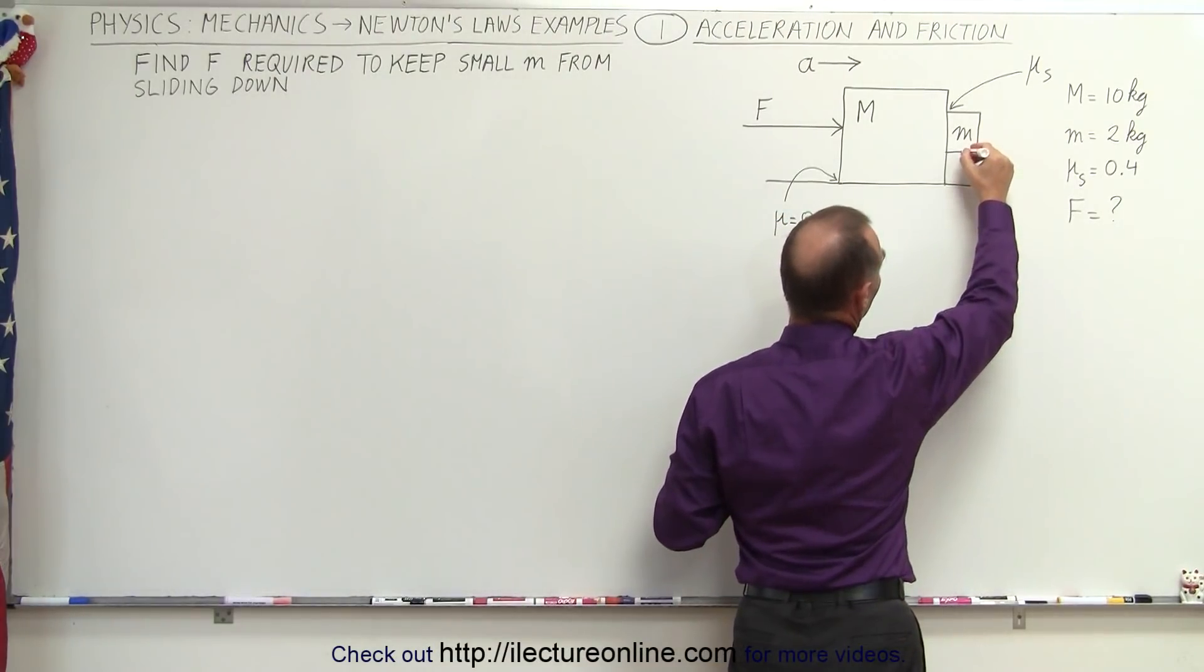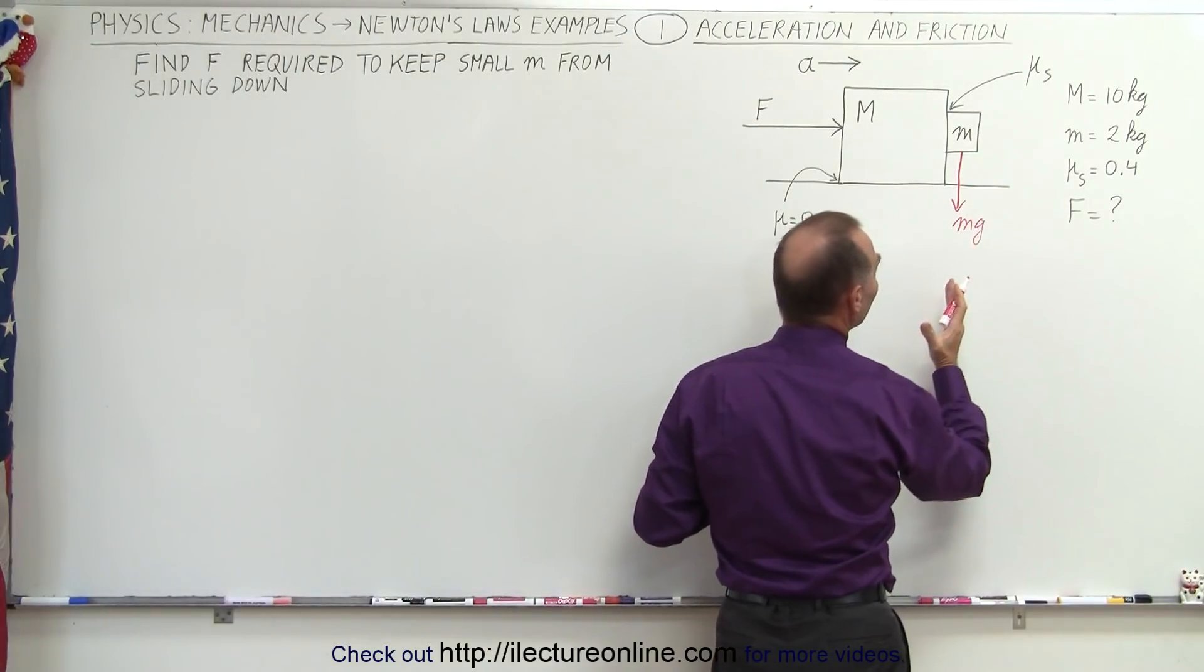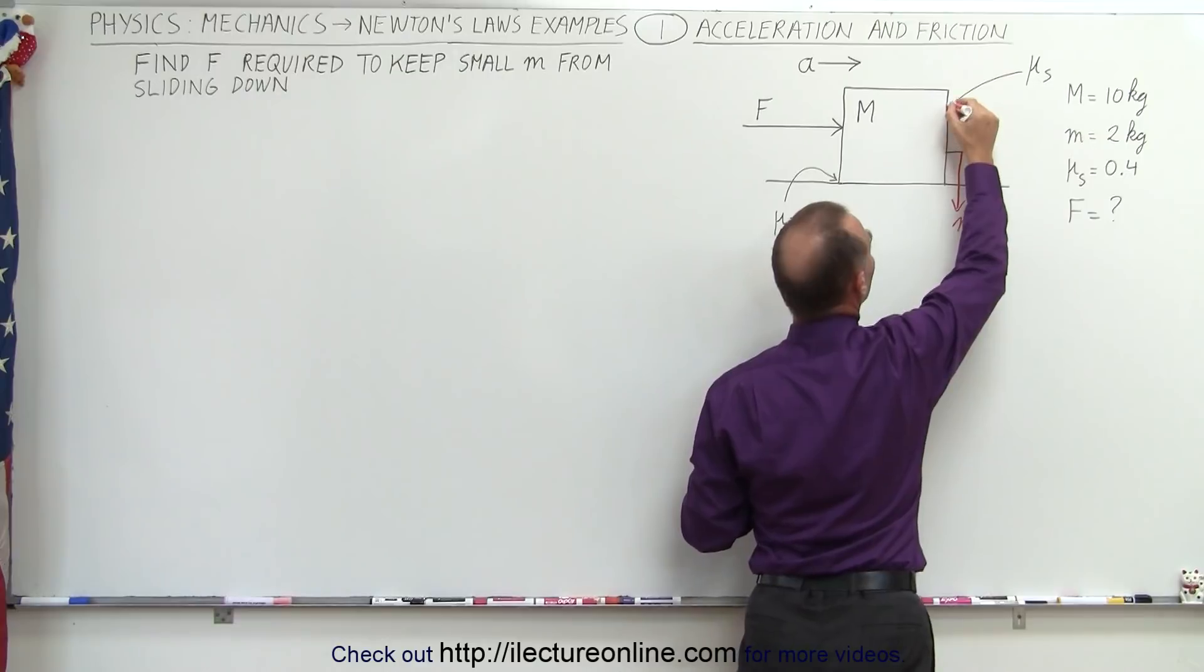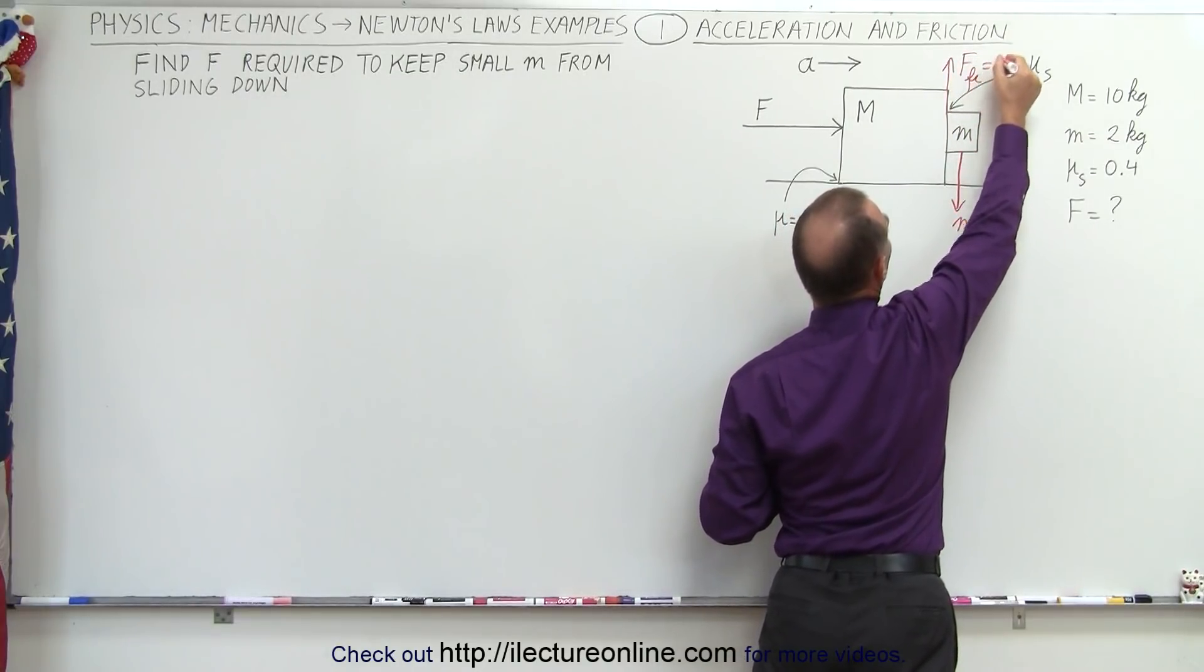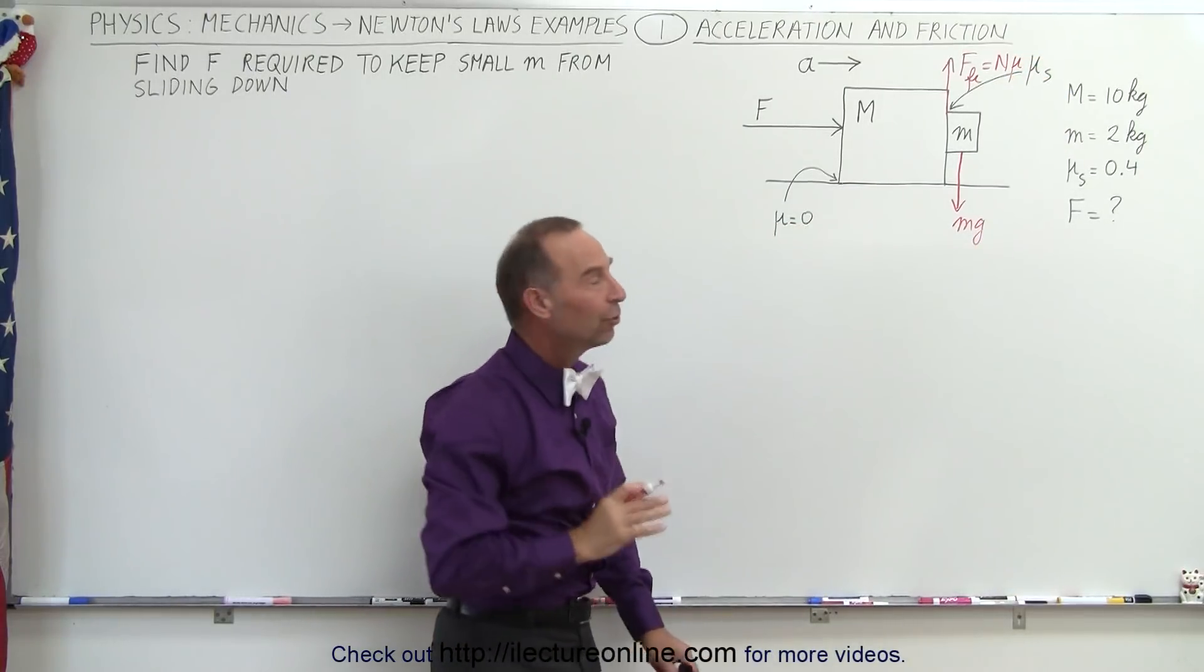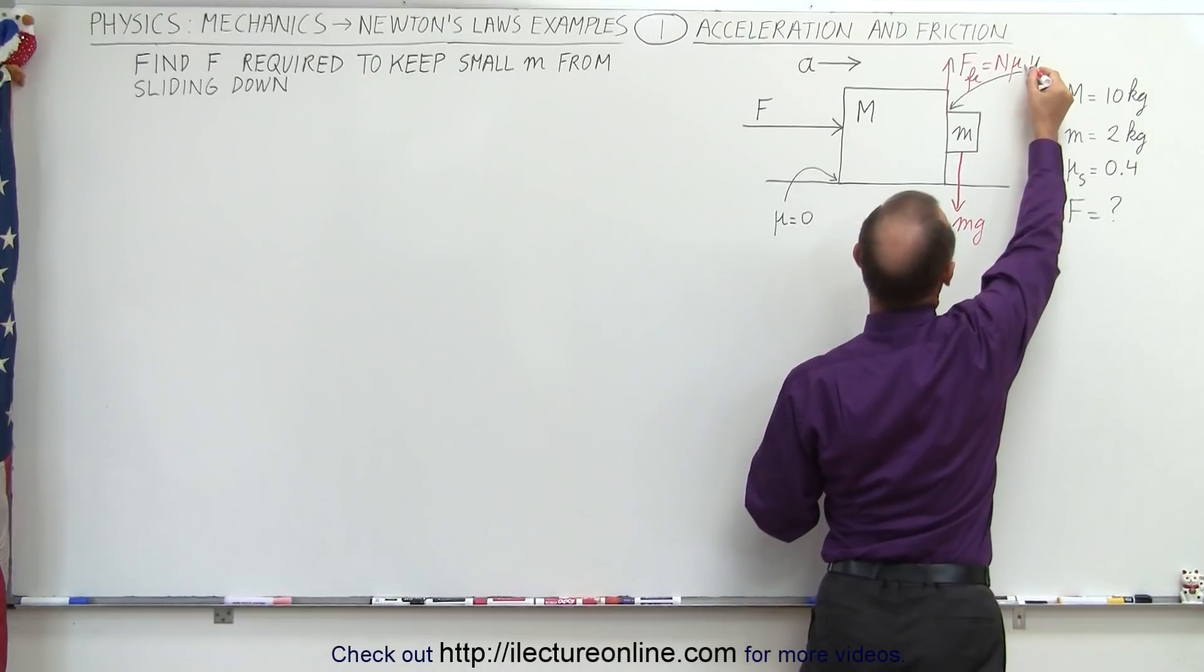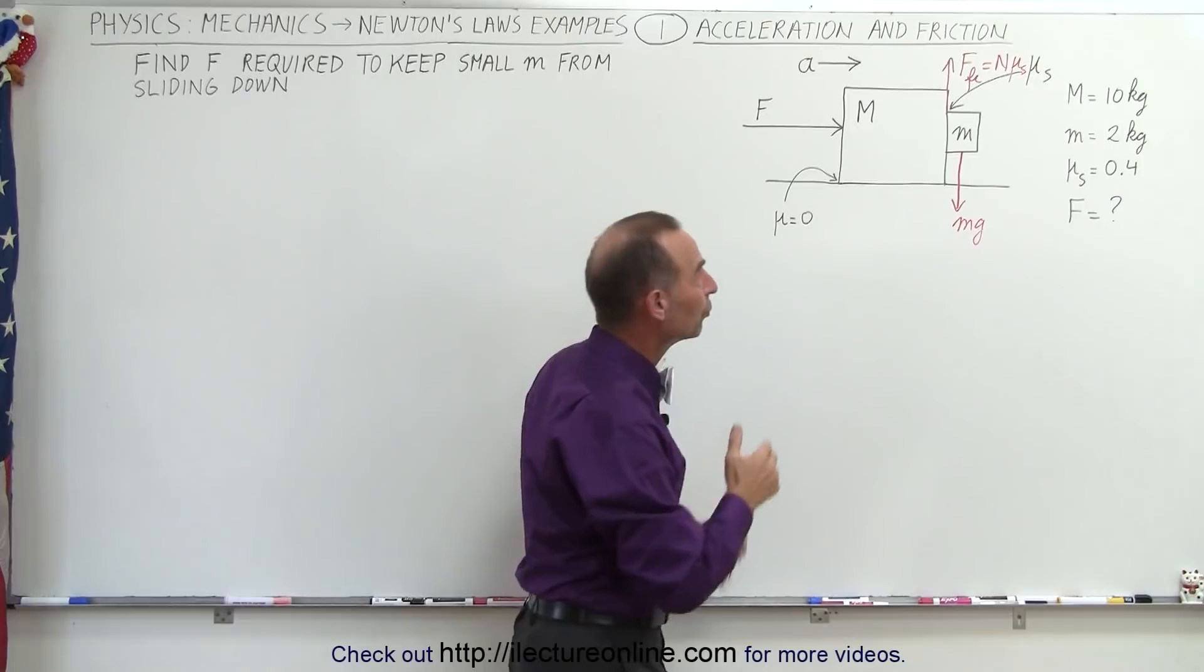First of all, we have the force of gravity pulling the small mass down, and then we're supposed to have a friction force in the opposite direction, keeping the block from sliding. Now normally the friction force is defined by the normal force times the coefficient of friction. In this case, it should be the static coefficient of friction because the block is not supposed to move.